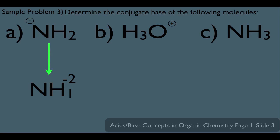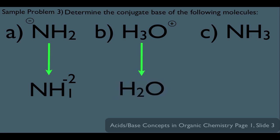Let's look at B. To determine its conjugate base, we remove one of its hydrogens and a plus charge. This gets us to H2O, neutral. And lastly, C — NH3's conjugate base would be NH2-.